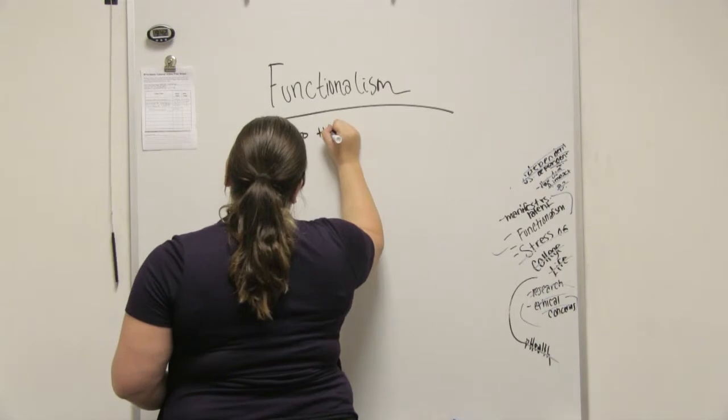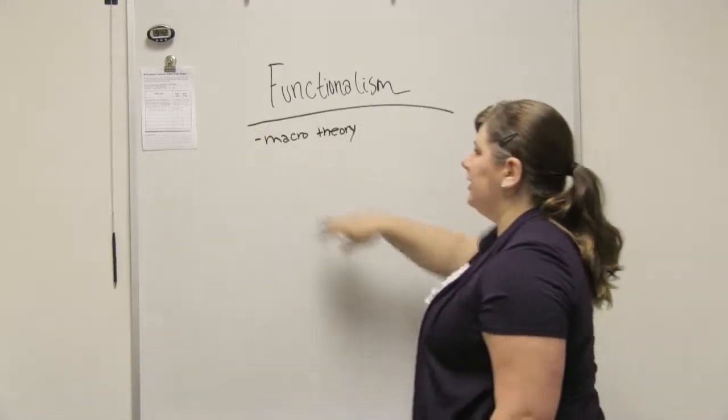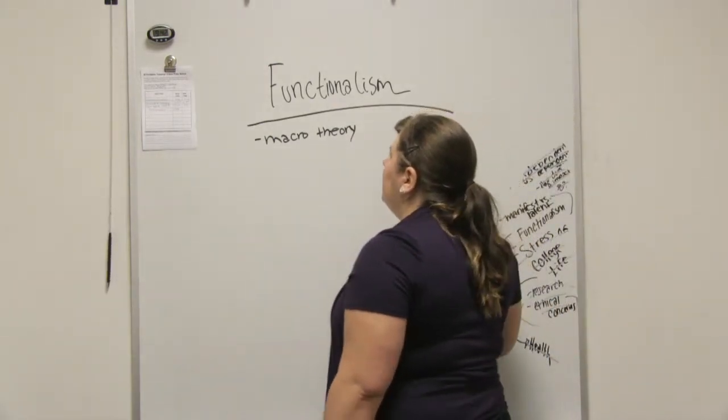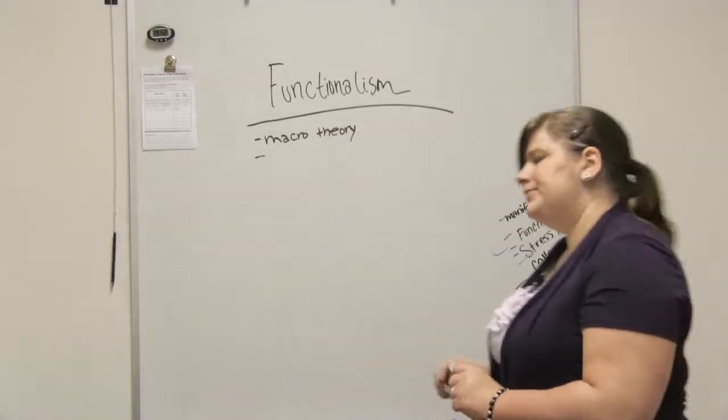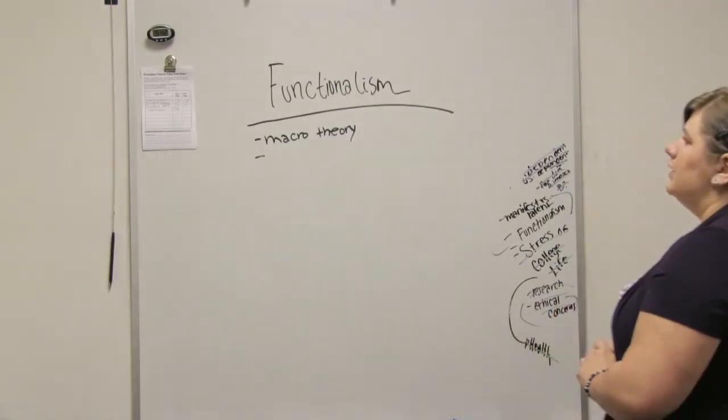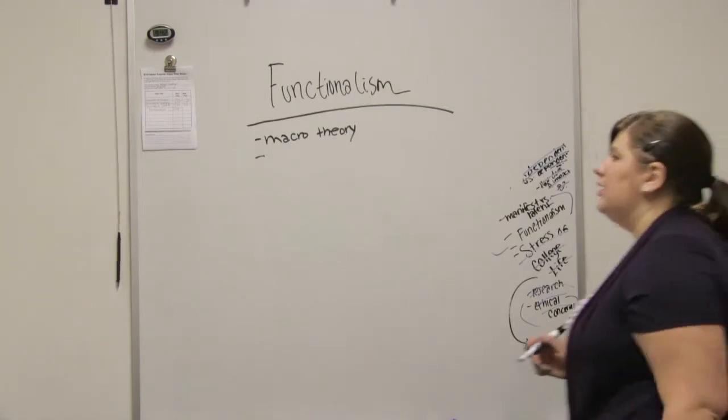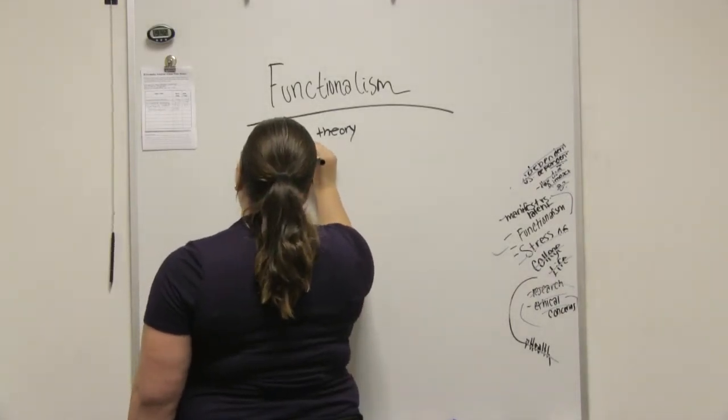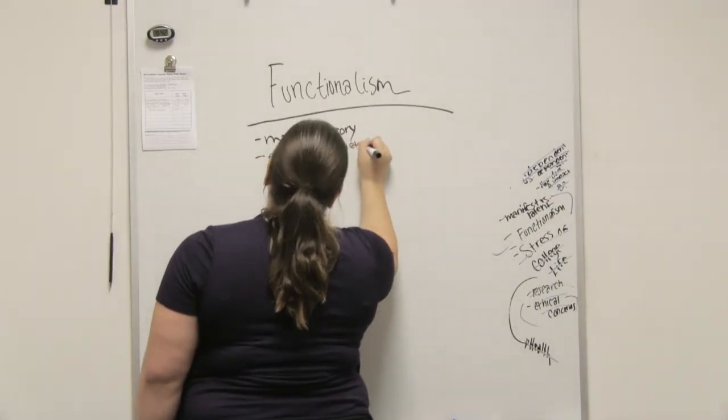Okay, so functionalism is a macro theory, meaning that we usually apply it on the grand scale. It's one of the bigger sociological theories. Tell me what you think would be the definition of functionalism, like a basic estimation. Yeah, that's okay. So the idea of functionalism is that everything in society has a function.